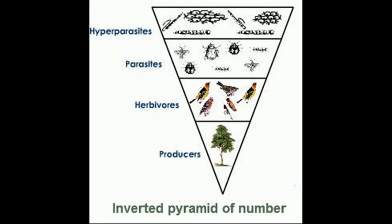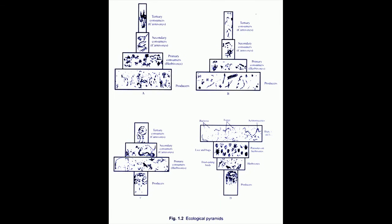The final of the three styles is the Inverted Pyramid of Numbers. This type of ecological pyramid is seen in a parasitic food chain, where one primary producer supports numerous parasites, which support more hyperparasites. So, it is entirely possible that the producers can have a lesser number of individuals than primary consumers, such as in the partly upright pyramid of numbers.